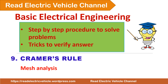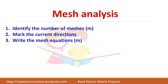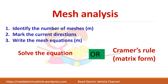In this video, let us see about Cramer's Rule, which can be used to solve the mesh equations. In mesh analysis, the first step is identifying the number of meshes, then we will mark the current direction and write the mesh equation. You can either solve the equation directly or apply Cramer's Rule — that is, writing in matrix form and solving the matrix to find the currents.